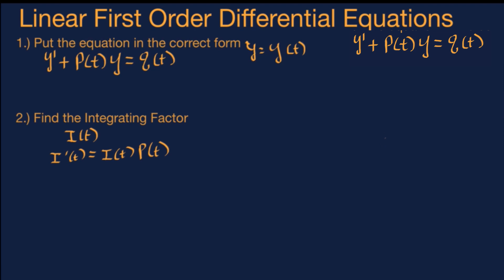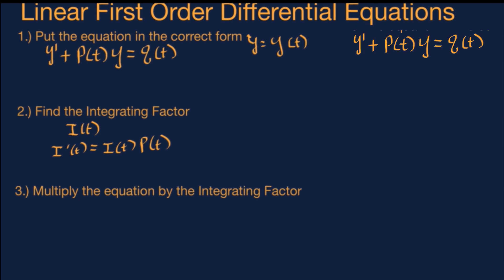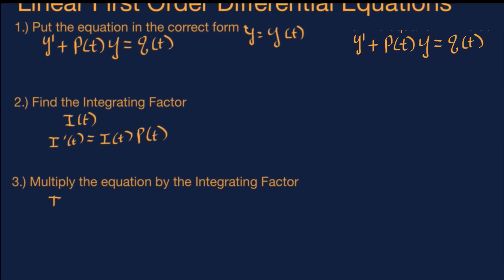For now, let's pretend we have found the integrating factor and move on to the next step, which is to multiply the entire equation by this special function. When you do that, you get i(t) times the derivative of y, plus i(t) times p(t) times y, and all of that equals i(t) times q(t).